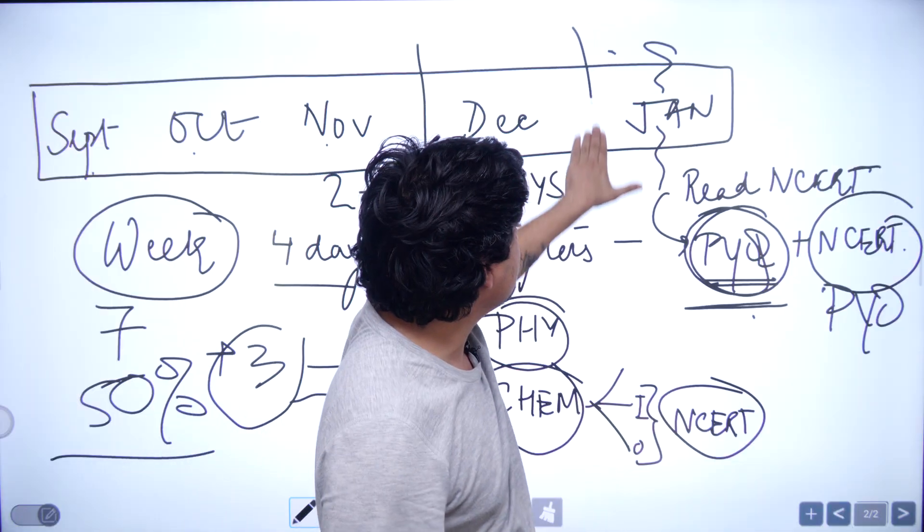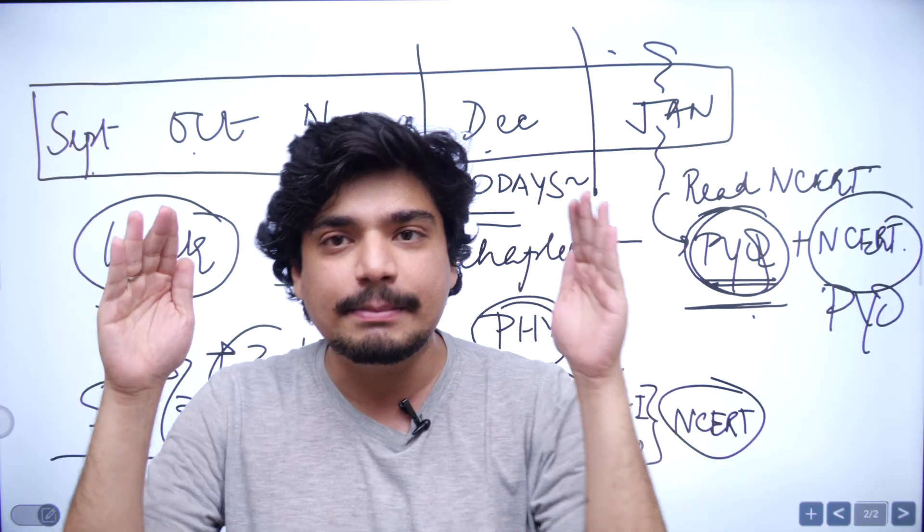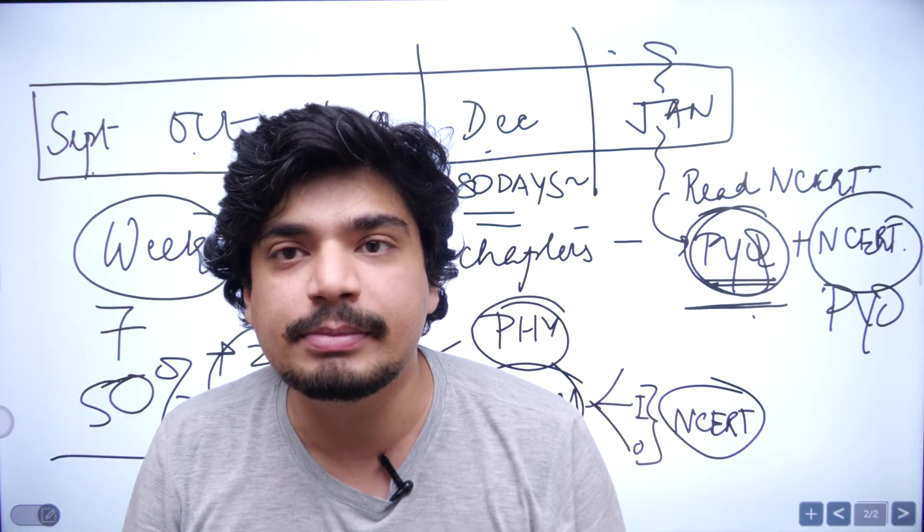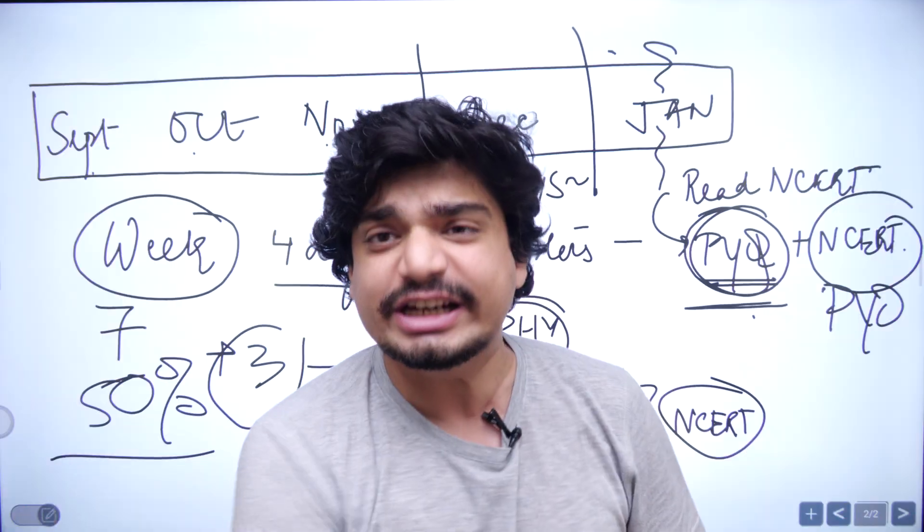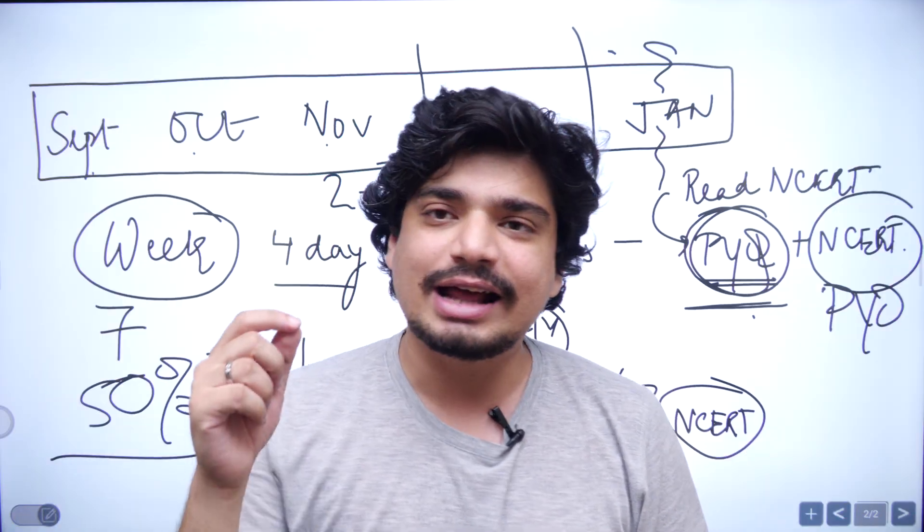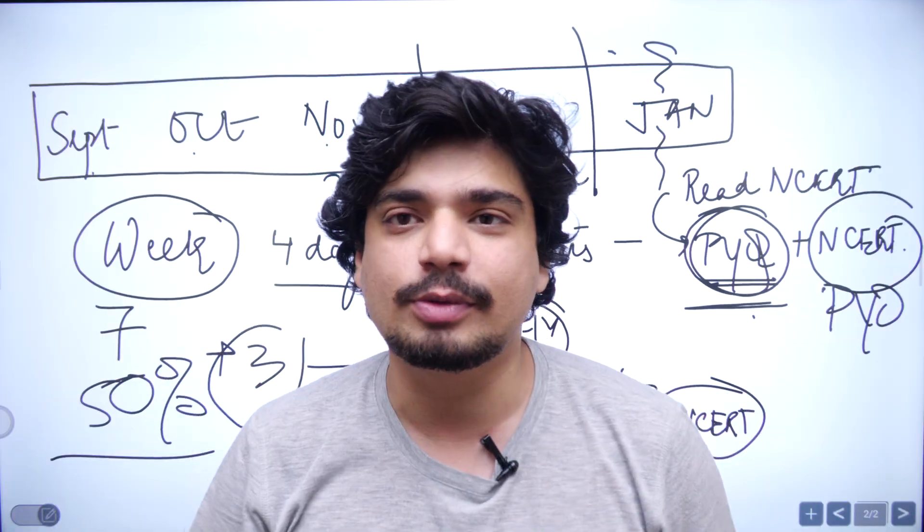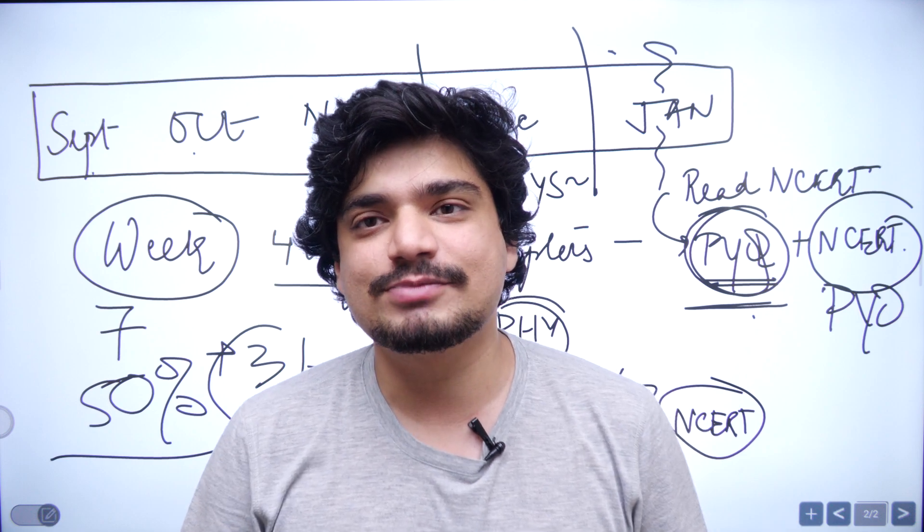Finish the syllabus by December, January. Then one revision till March. Another revision till April mid. And one final revision in 15 days. When you brush through all the formulas, you read your NCERT once again thoroughly. And then you give the exam and nobody is going to stop you from cracking it. That's it from my side today. Thank you and have a nice day.